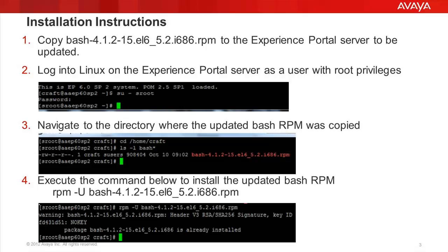From that particular directory, we need to issue the command for RPM installation, which would be: rpm -Uvh followed by the complete file name of the RPM, and then hit Enter. Just wait for the prompt to come back, as we see on the screen here.